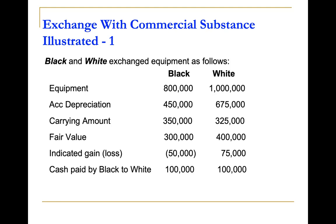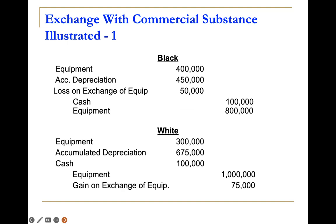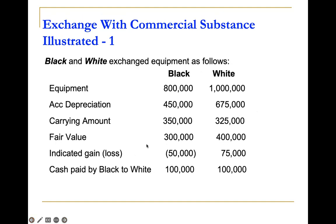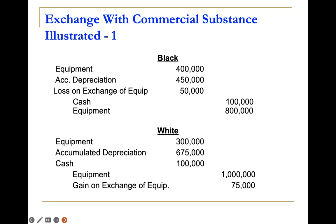The asset received by Black is what White gives up. The cost assigned to Black's equipment received is: fair value of asset given up ($300,000) plus cash paid ($100,000) = $400,000. The journal entry in the books of Black: debit equipment $400,000; credit equipment (old) $800,000; debit accumulated depreciation $450,000; credit cash $100,000; debit loss on exchange $50,000.